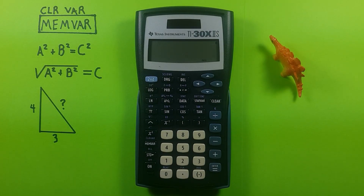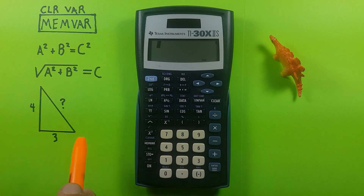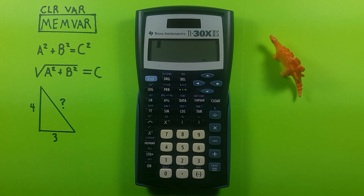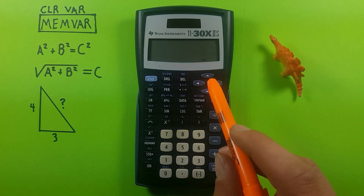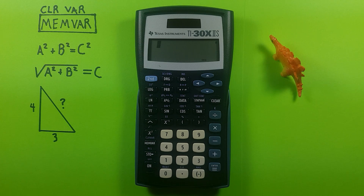We can also use the memvar key, located here, to recall data and display it as the letter that is the name of the save slot. If we recall the data stored in the A slot, it would display as A on the screen. This can be very helpful when solving known formulas or complex equations.